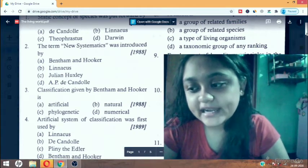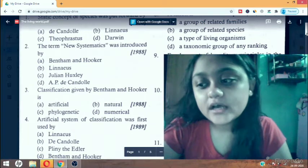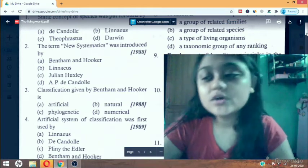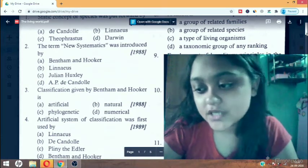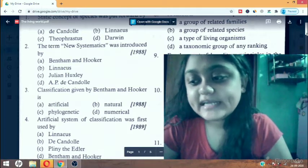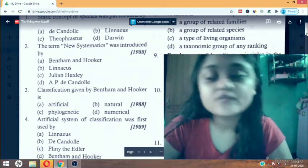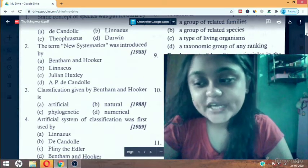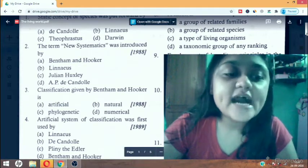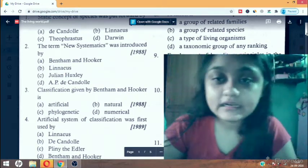The answer is C, Pliny the Elder. During the early period of taxonomy, Theoprastus gave names and description of 480 plants in his book Historia Plantarum on the basis of their habit, but Pliny the Elder introduced first artificial system of classification in his book Historia Naturalis. He classified both plants and animals.